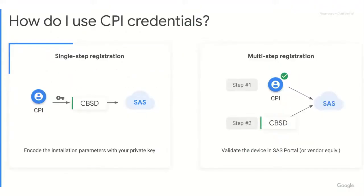How do you use those CPI credentials to validate, authorize, or sign devices? There are two basic ways. You can either use single-step registration, where your private key gets entered into the CBSD's installation parameters, and then that gets sent to the SaaS. Essentially, you are signing the CBSD via the installation parameters and your private key to make sure that the information it's using to register is accurate.